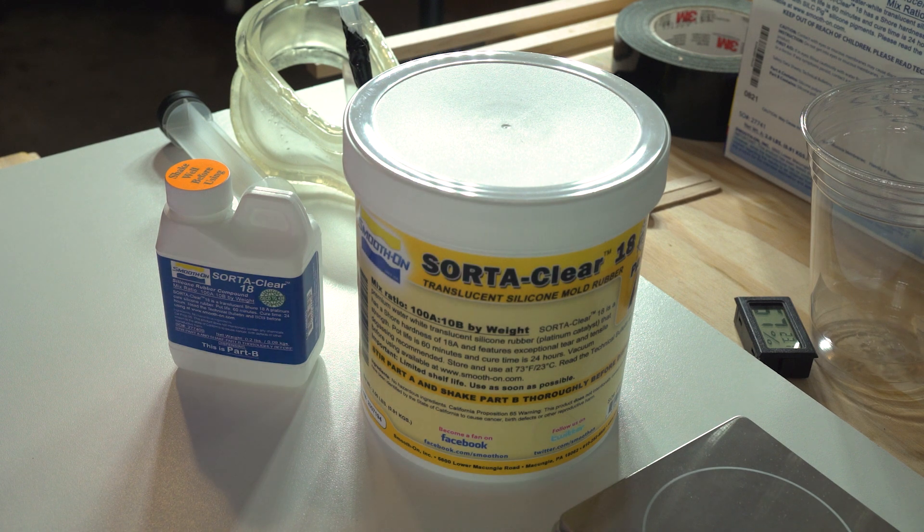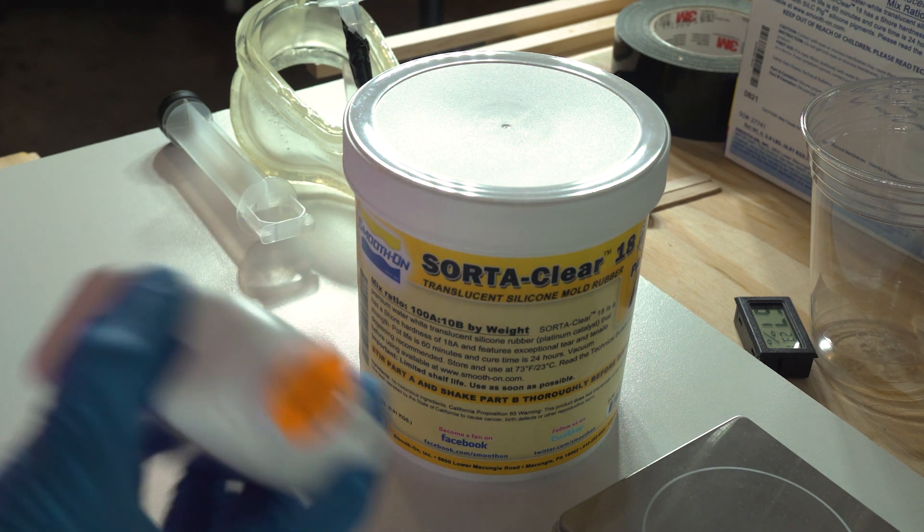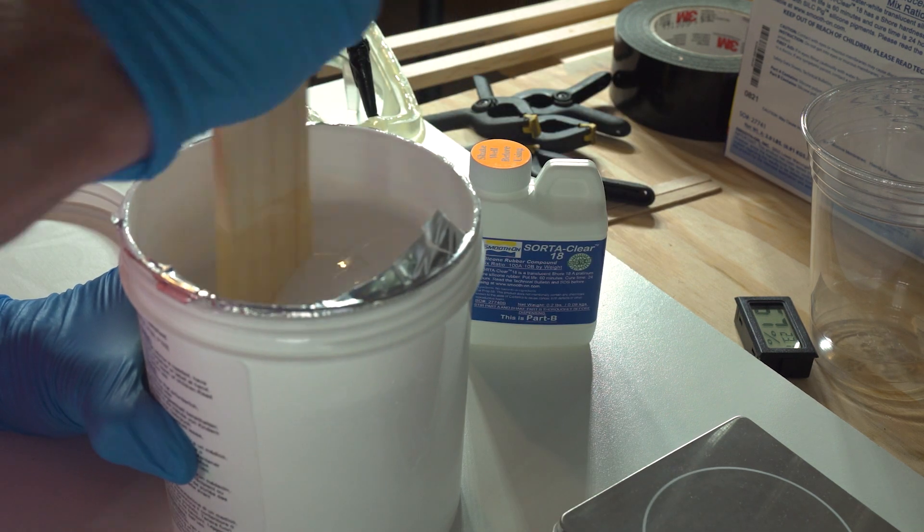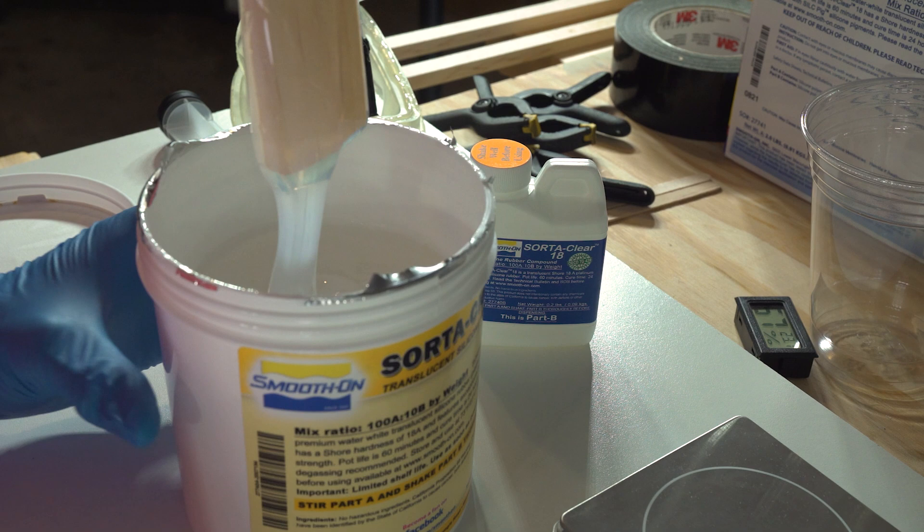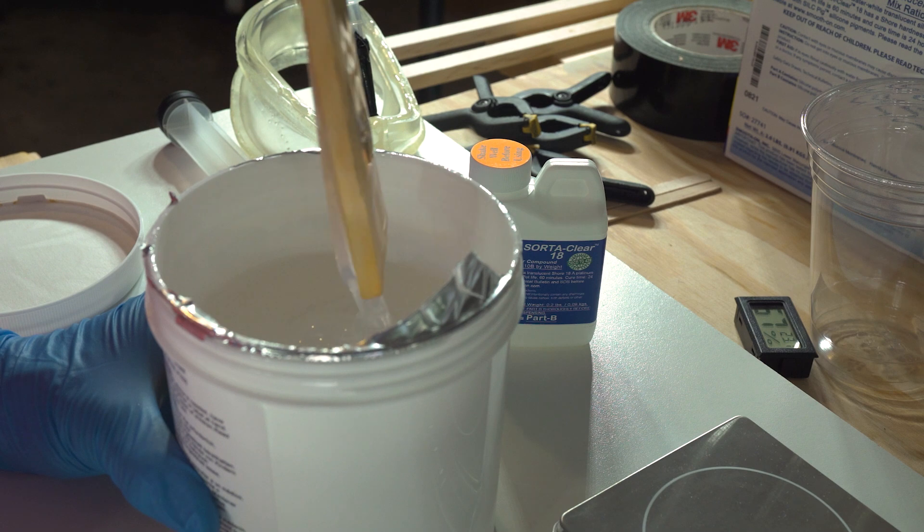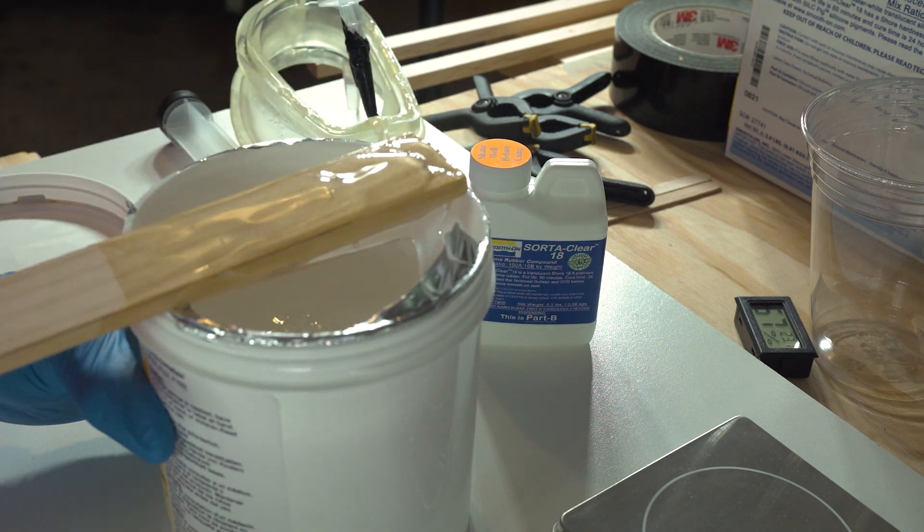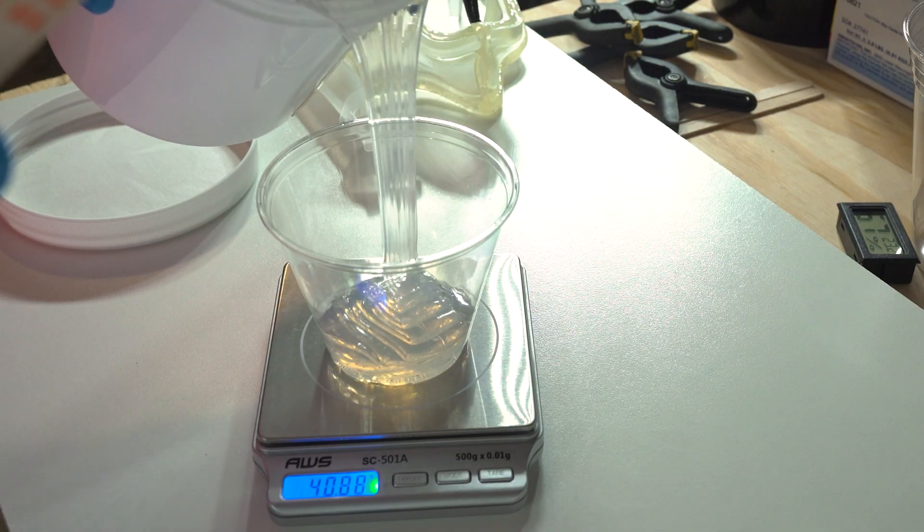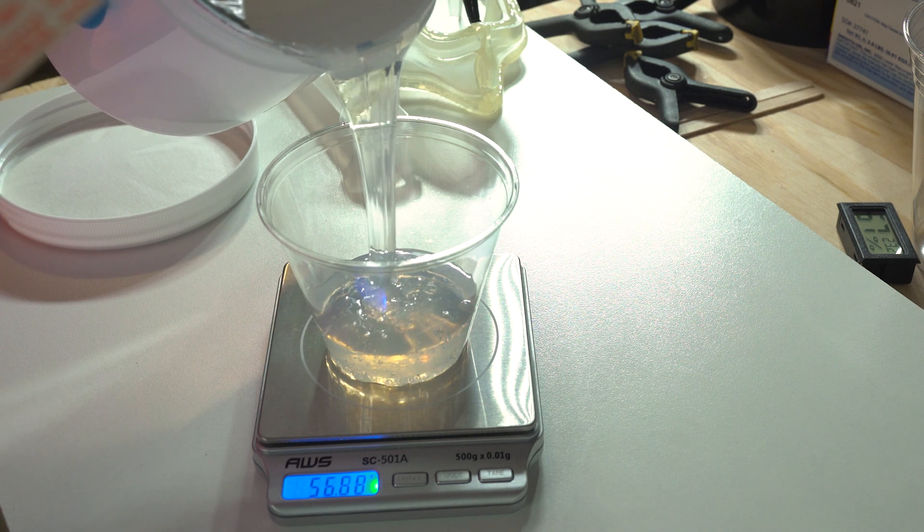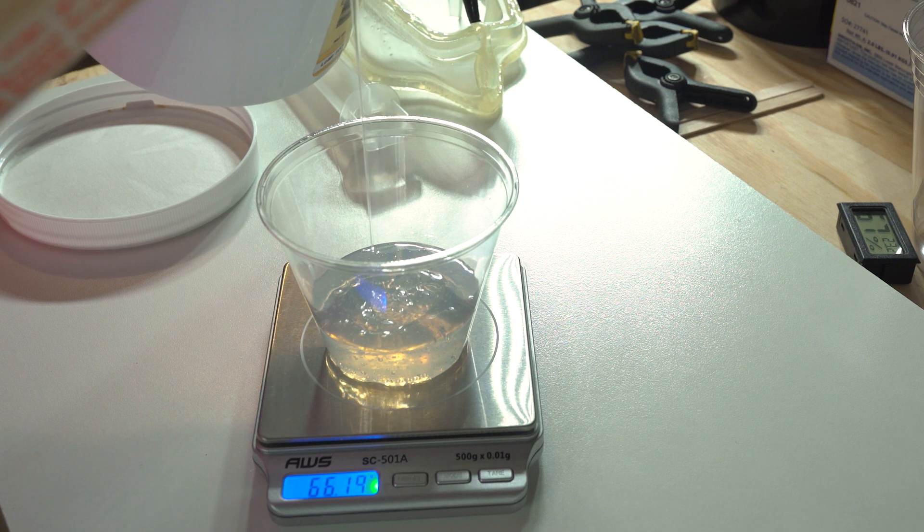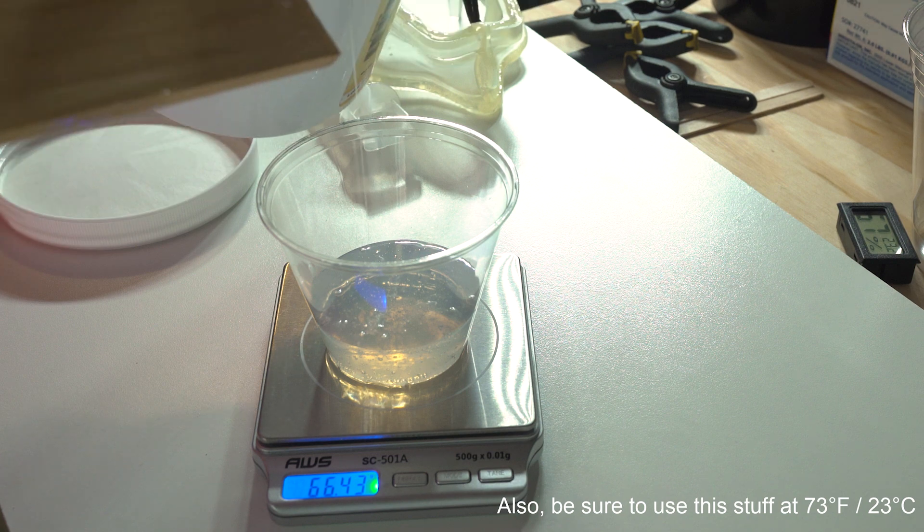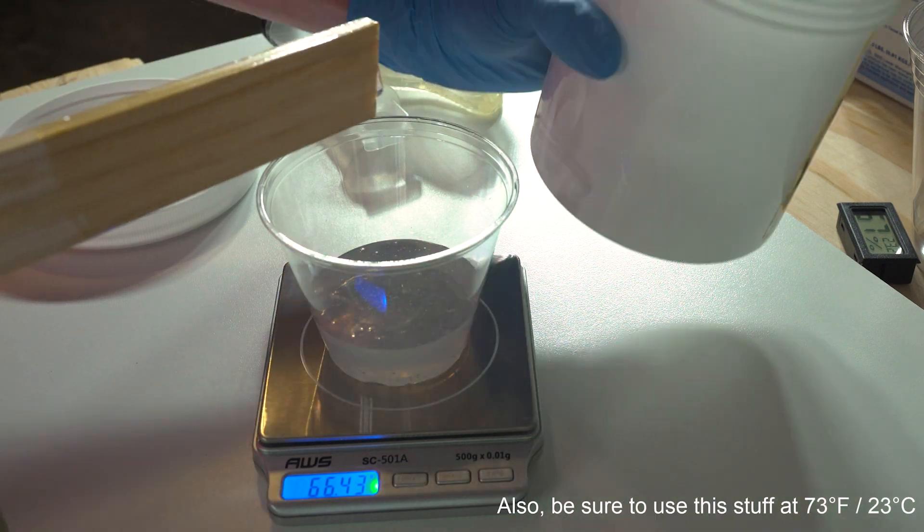The silicone was cast with two different types of material for this demo: SortaClear 18 that you see here, and EcoFlex 0030. Both are certified skin-safe. All the individual components need to be mixed thoroughly before combining them. The EcoFlex mixed up more easily because it is a 1-to-1 mixture. The SortaClear is a 10-to-1 mixture, so a gram scale or graduated measuring cup is required. 75 grams of material is just about perfect for a single mask.